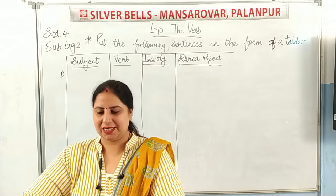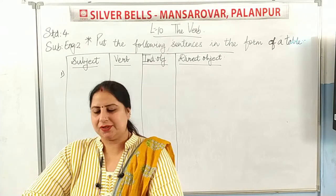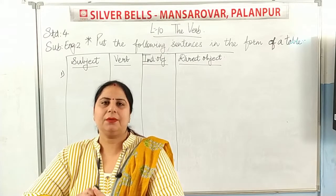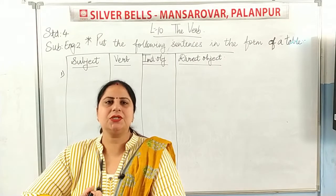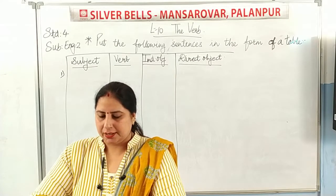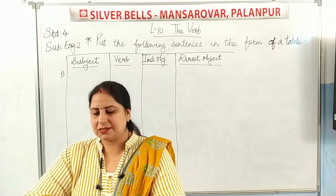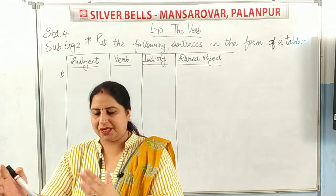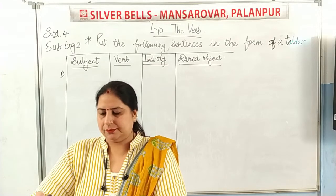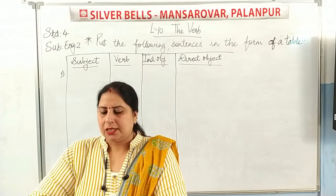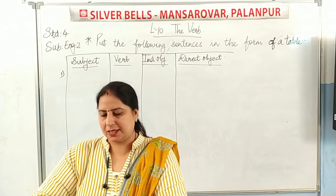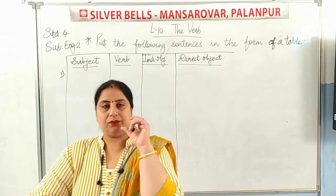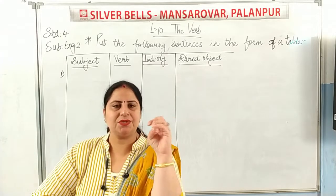Hello students, welcome back. I am Manji Devnani. Today we are going to start our new chapter — lesson 10, the verb. A verb is what shows action in a sentence. In our exercise, we have sentences and we need to separately show in a table which is the subject, which is the verb, which is the indirect object, and which is the direct object.